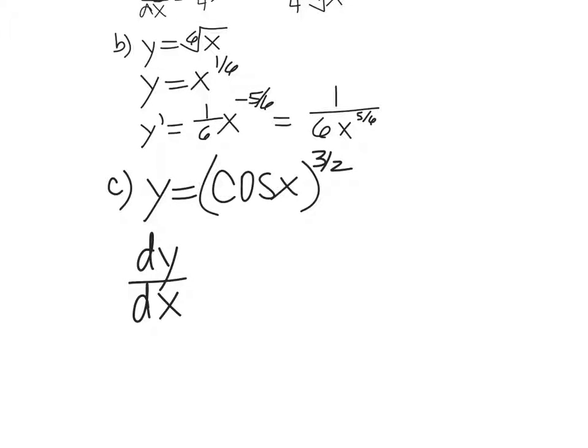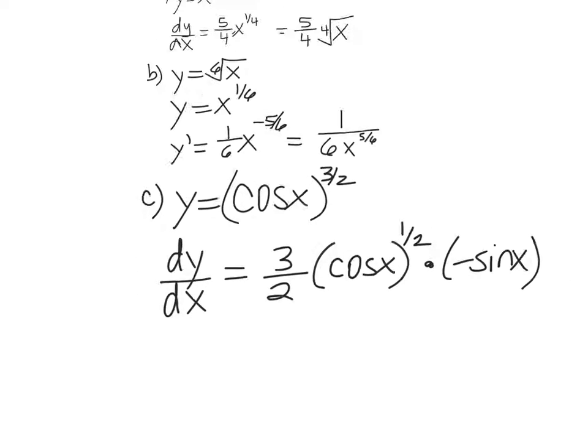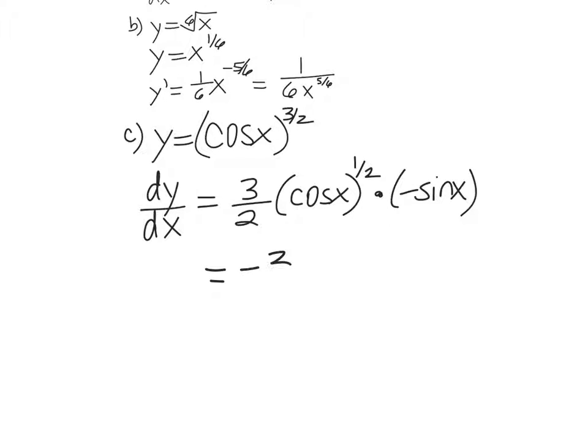We've got to take the derivative of the outer function, leaving the inside alone. So, you're going to bring three halves down, leave cosine x as is, and then subtract one off. All I'm doing is the power rule. So that would be to the one half. Times the derivative of the inside function, and the derivative of cosine is negative sine. Negative sine of x. And then you can rewrite this. Put the negative out front. Negative three halves. I'm going to even put sine x. And then you can write the square root of cosine x if you want to. You can leave it as to the one half either way. So chain rule.